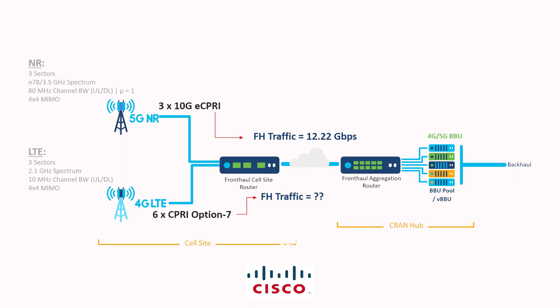Now that we have the bandwidth requirements for both LTE and NR, we should be able to capacity plan our fronthaul interface between the cell site router and the aggregation router, sitting at a central hub or far edge data center as we call it nowadays. Before we get into that interface, there is a small catch with the calculation we have done so far. In NR, we have Ethernet traffic, so we are good to carry that 12.22 Gbps on the fronthaul interface.